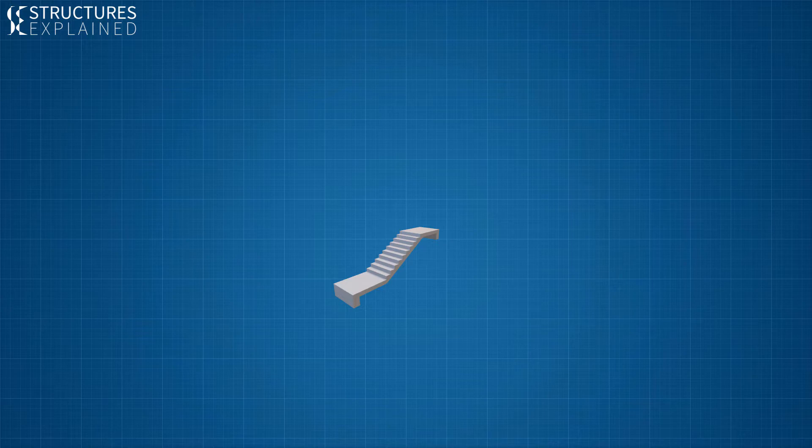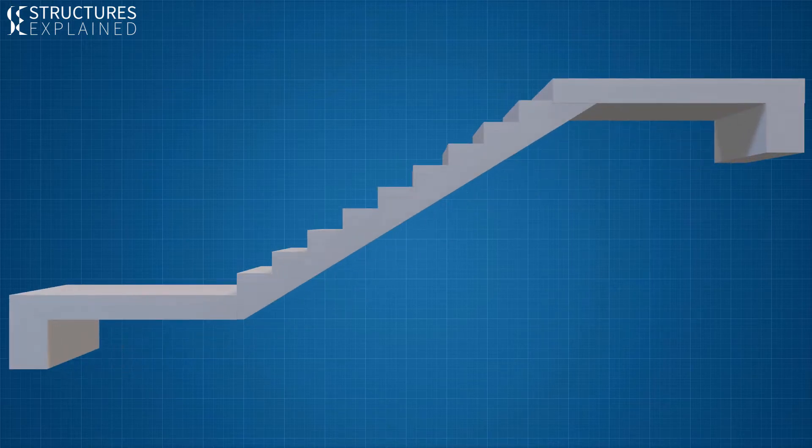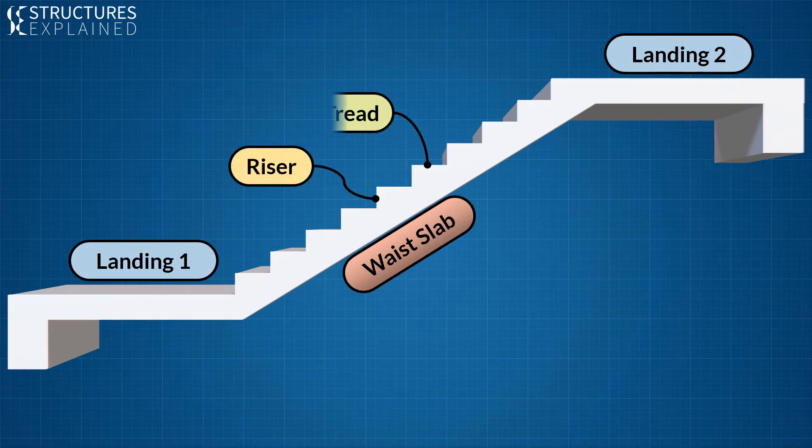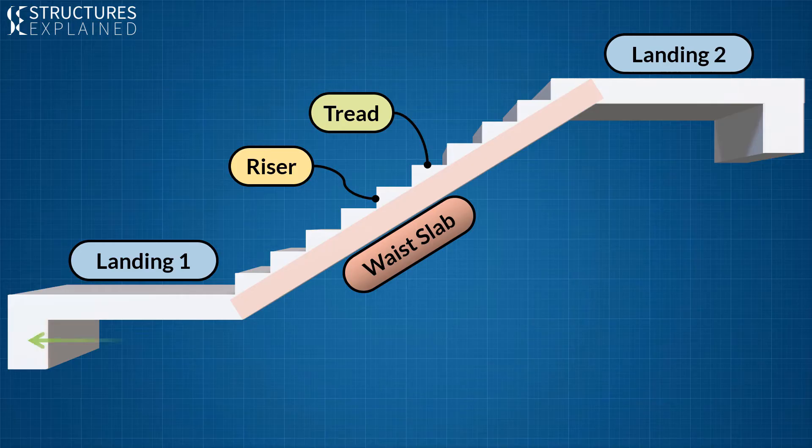Let's consider only a single flight of stairs. A typical stair consists of three parts, two landings and one waist slab. Waist slab has steps in which the vertical part is called riser and the horizontal part is called tread. Effective thickness of the waist slab is considered from the bottom of the riser till the face of waist slab. The distance between the supports is a span L.